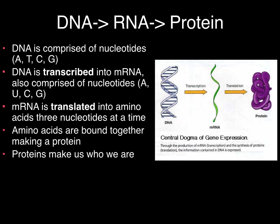DNA is then transcribed into mRNA. mRNA is also comprised of nucleotides: adenine, uracil, cytosine, and guanine. mRNA is then translated into amino acids three nucleotides at a time. Proteins make us who we are and allow us to express certain traits.